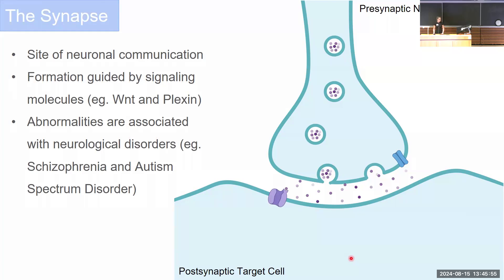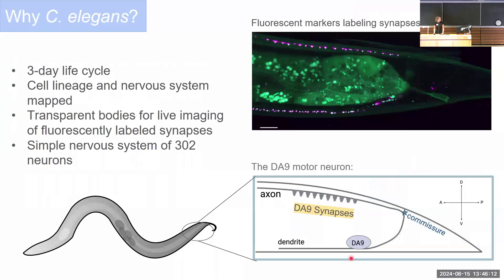I'm interested in where a synapse chooses to form on a neuron. To investigate this with single cell specificity, I use C. elegans as a research model. C. elegans are one-millimeter nematode worms with a three-day life cycle whose cell lineage and nervous system have been completely mapped. They have transparent bodies that allow live imaging of their synapses, and they have a simple nervous system of just 302 neurons.